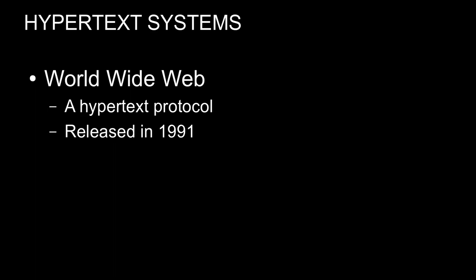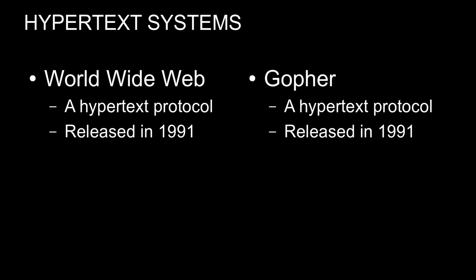Hello, and welcome to this little video on Gopher. If you look at the internet today, a lot of people would say that it's sort of defined by the web. The web is just everyone's favourite way to use the internet. But if you go back in time to 1991 when the web was released, you'll find it didn't actually happen in a vacuum. There was another hypertext protocol called Gopher, and that actually competed with the web in the early days. So, what happened to Gopher?